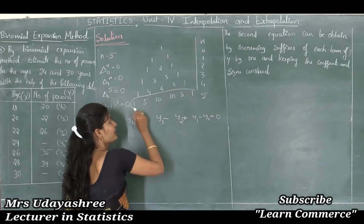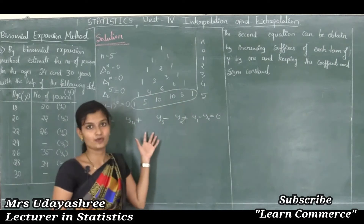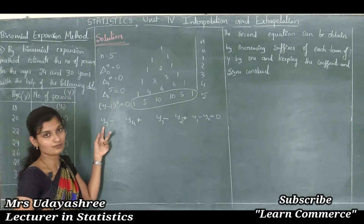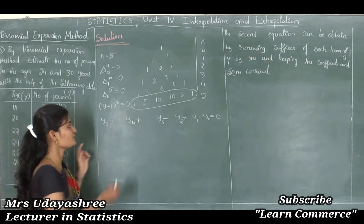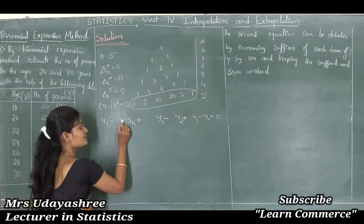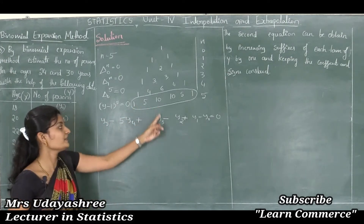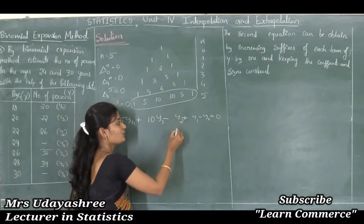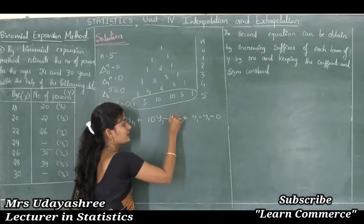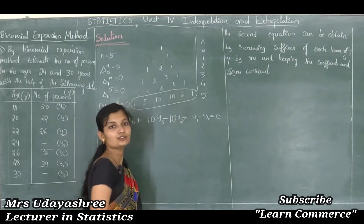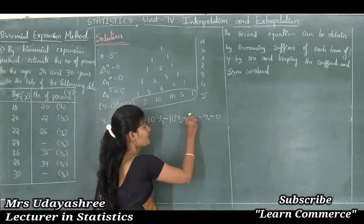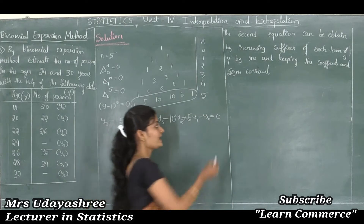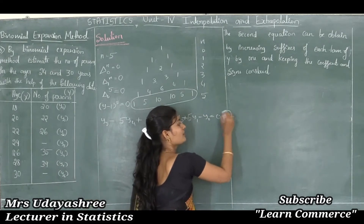Multiplying these coefficients to the equation: 1×y5 = y5, 5×y4 = 5y4, 10×y3 = 10y3, 10×y2 = 10y2, 5×y1 = 5y1, and 1×y0 = y0. This is equation number 1.